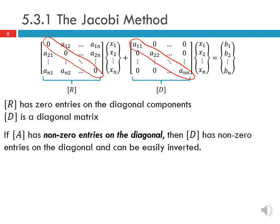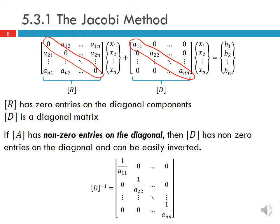If our original matrix A has non-zero entries on the diagonal, then our matrix D also has non-zero entries on the diagonal and can be easily inverted. The inverse of D is shown here, where the diagonal components are 1 over a₁₁, 1 over a₂₂, and so on up to 1 over a_nn.